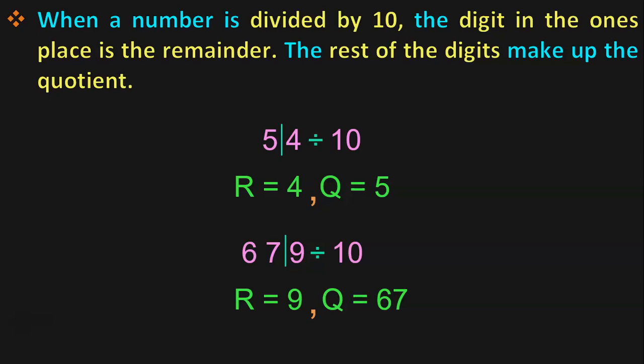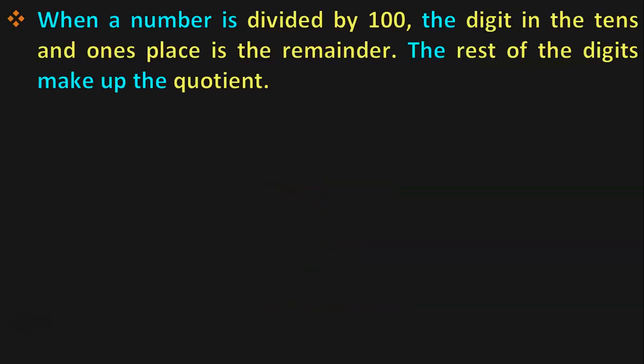Hope you have understood this concept. Next, let us understand how to divide by 100. When a number is divided by 100, the digit in the 10's and 1's place is the remainder. The rest of the digits make up the quotient.